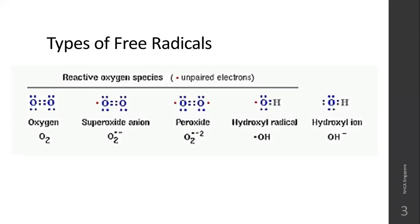Coming to the types of free radicals, you have reactive oxygen species, meaning unpaired electrons. These are atoms — the free radical atoms — that have unpaired electrons in their outermost shell, and this is what makes them a free radical. For example, superoxide anion, peroxide, and hydroxyl radical all have unpaired electrons. Oxygen itself is not a free radical because every electron in oxygen's outermost shell has a pair.